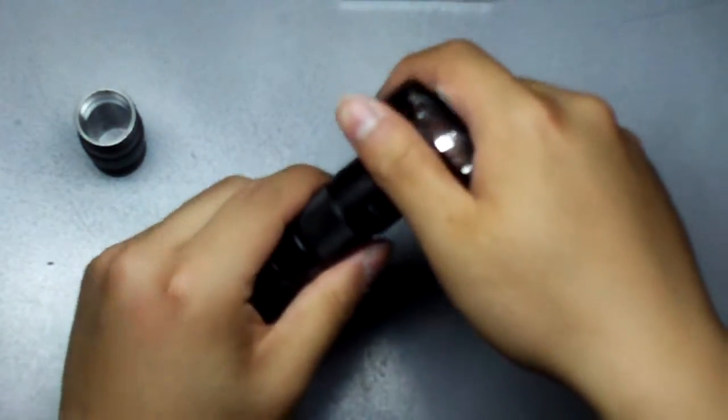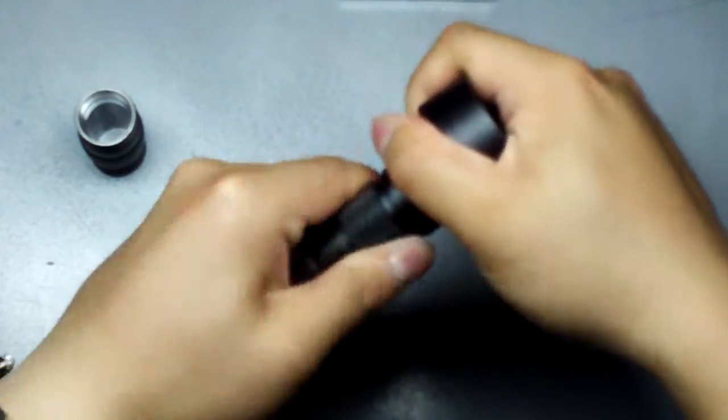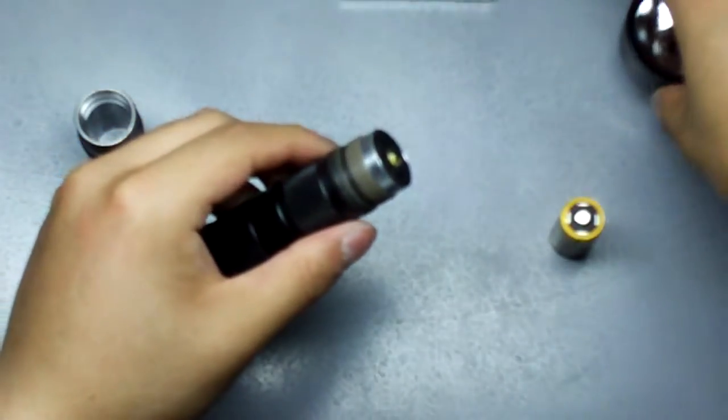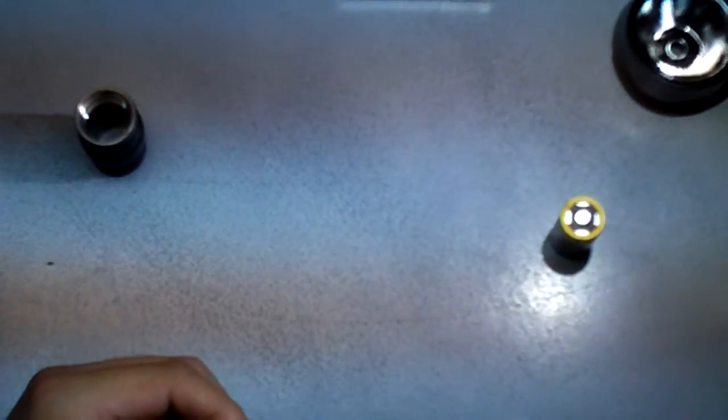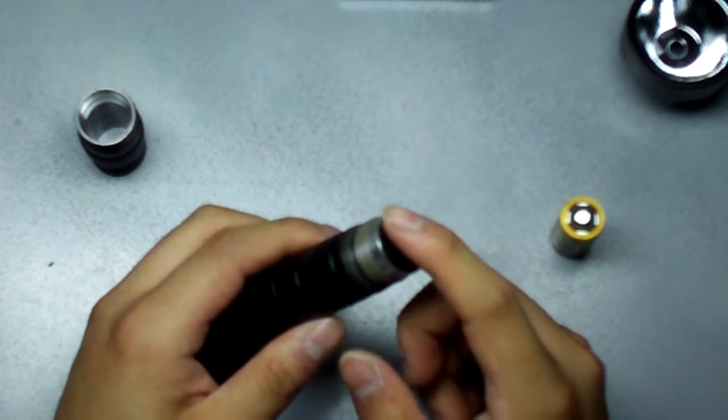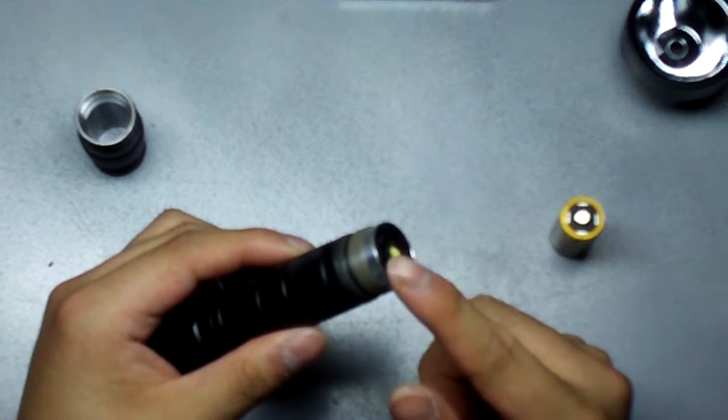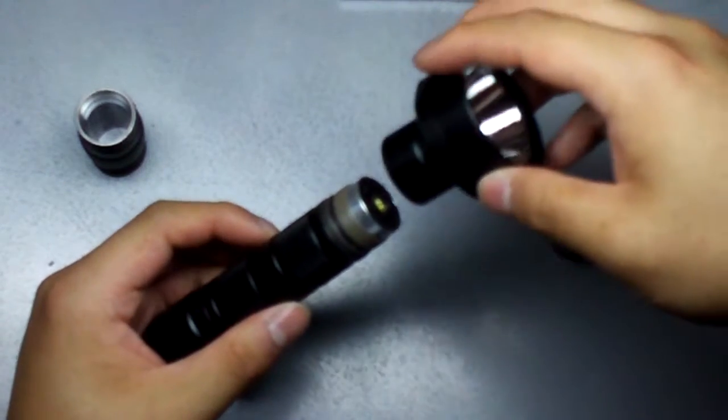One thing about this light is that because it uses that pill on the battery tube, you can actually just take off the head. And when you turn on this light like this, it's just like a pure floodlight. And it's actually pretty good. Although, you have to be careful about dropping it because you don't want to damage this emitter, obviously. You could probably create some sort of lens to cover it and it'll just be a great floodlight.